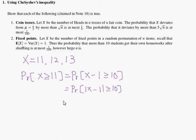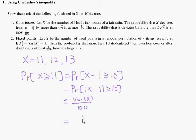So by the Chebyshev inequality, we know this is smaller or equal to the variance of X over 10 squared, which is 100. And because the variance of X is 1, the answer is 1 over 100. So this is question 1.2.